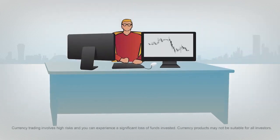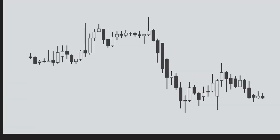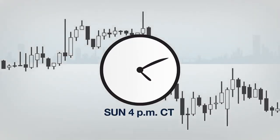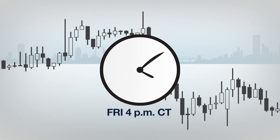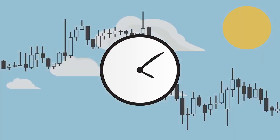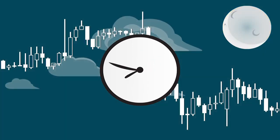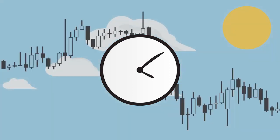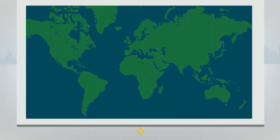Currency prices change almost constantly during the week, because the Forex market is open continuously from Sunday at 4 p.m. until Friday at 4 p.m. Central Time. A trading day starts at 4 p.m. and ends at 4 p.m. Central Time the following day. The market has to be open around the clock because of the global nature of the economy.